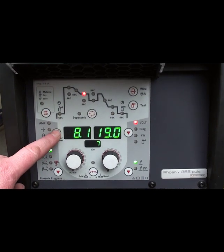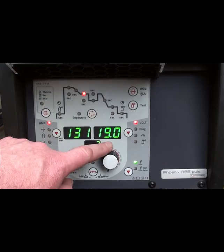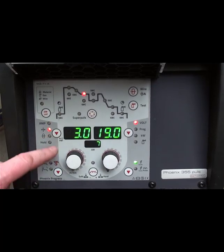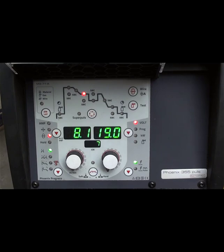If we push the button and scroll through for amps, it tells us that it's on 131 amps, 19 volts. There's your material thickness of 3mm. The wire speed is 8.1 meters per minute. So that's the wire speed.